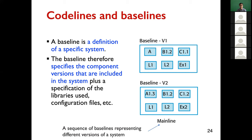For example, when talking about OpenMRS version 2.09, you're talking about a baseline, but each individual module or other component may be from different code line versions. In summary, a sequence of baselines represents different versions of the system — v1, v2, and so on.